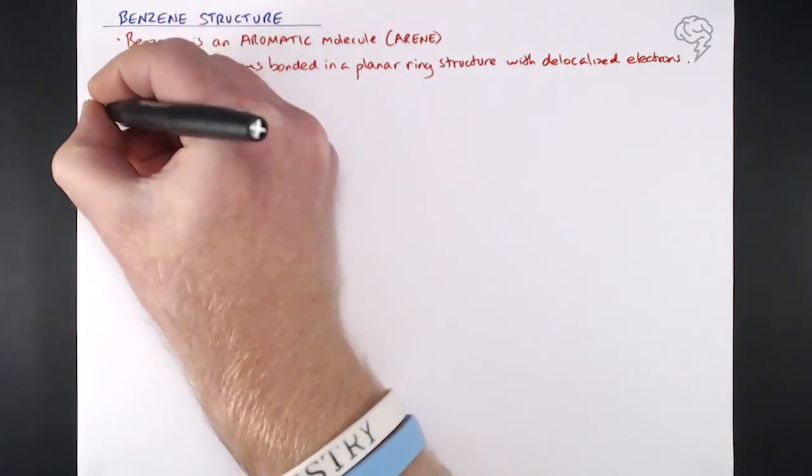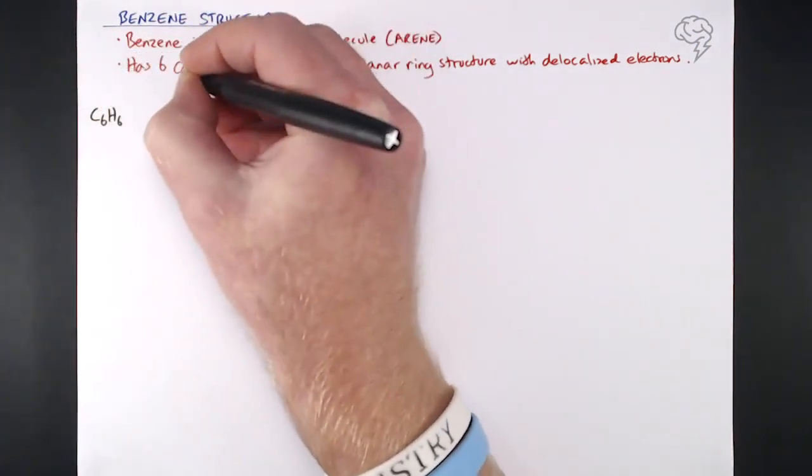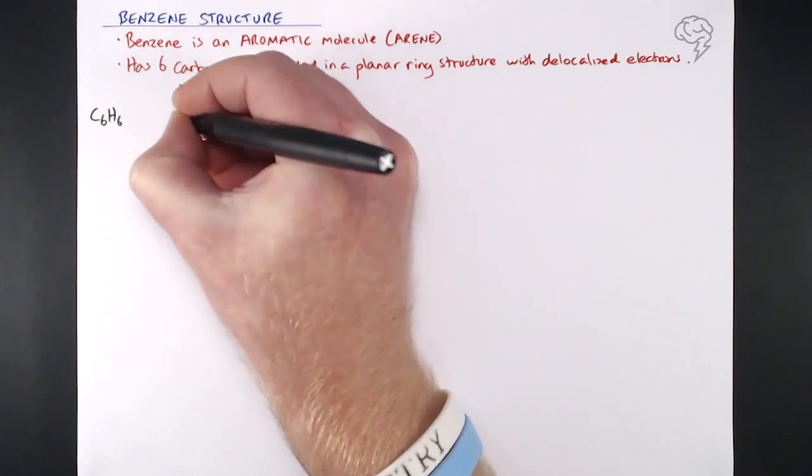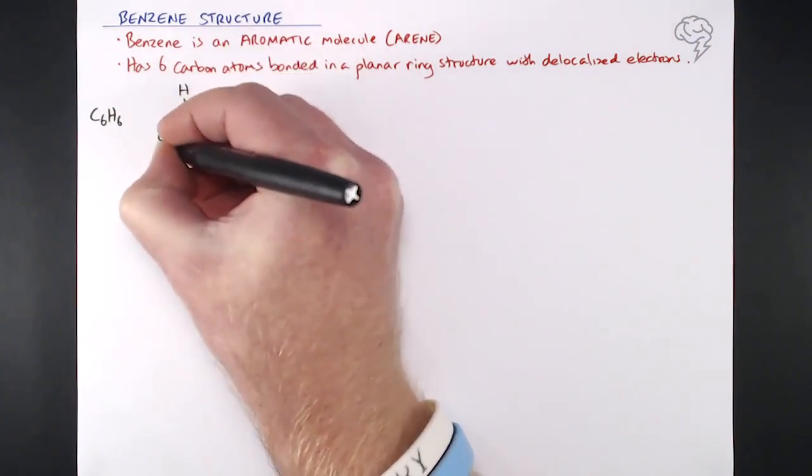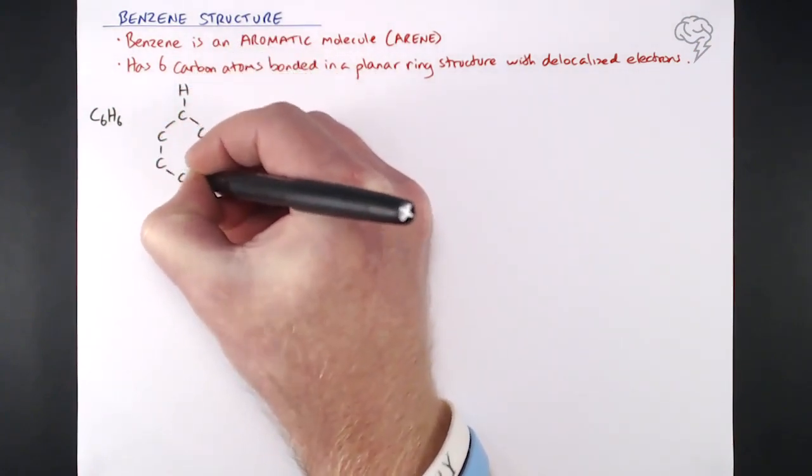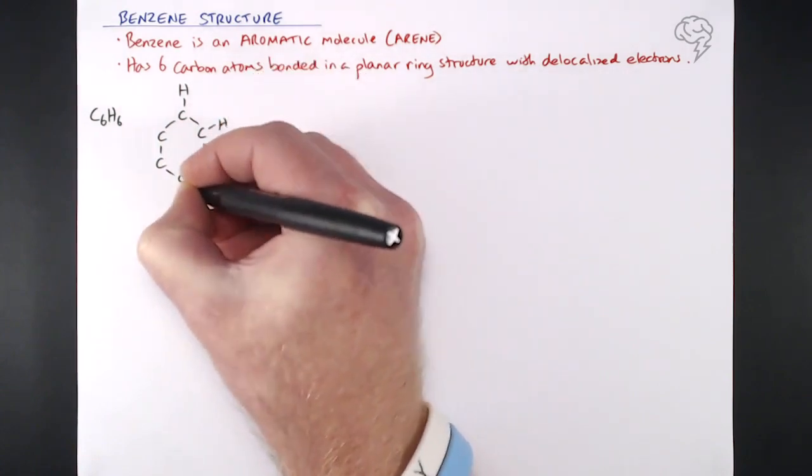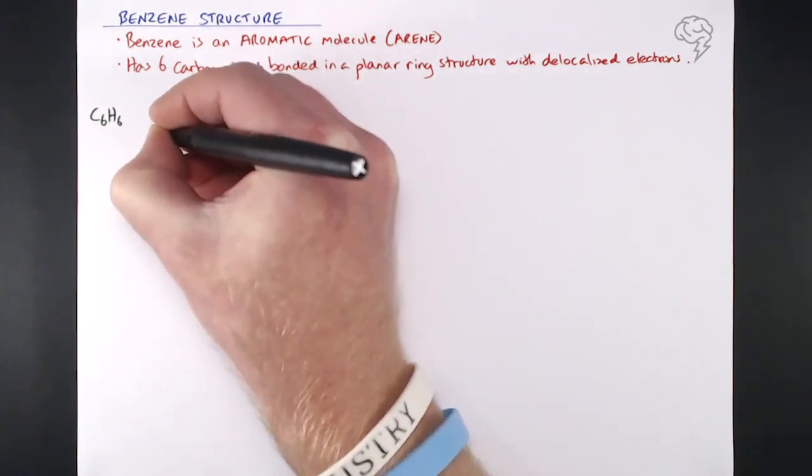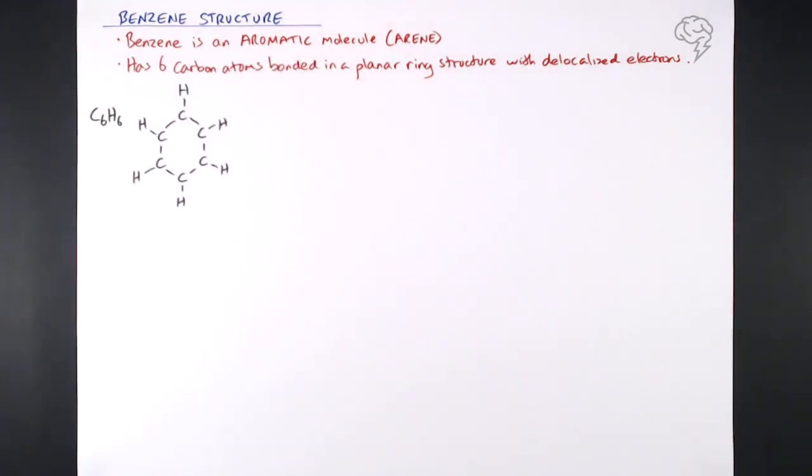So in terms of its actual structure, its molecular formula is C6H6. So it doesn't conform to an alkane or an alkene. It's got a general formula all of its own. So it's CH would be the empirical formula, but it's C6H6.